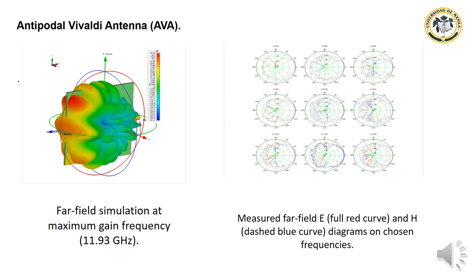This picture shows the far-field simulation at maximum gain frequency at 11.93 GHz. The other picture shows the measured far-field E-plane (full red curves) and H-plane (dash blue curves) diagram at the chosen frequency.